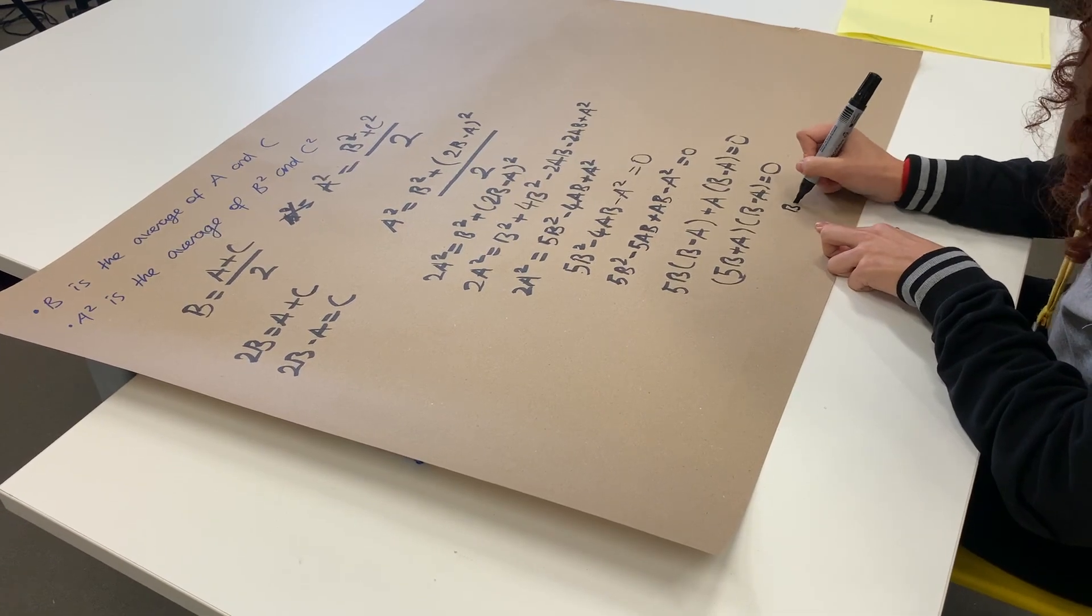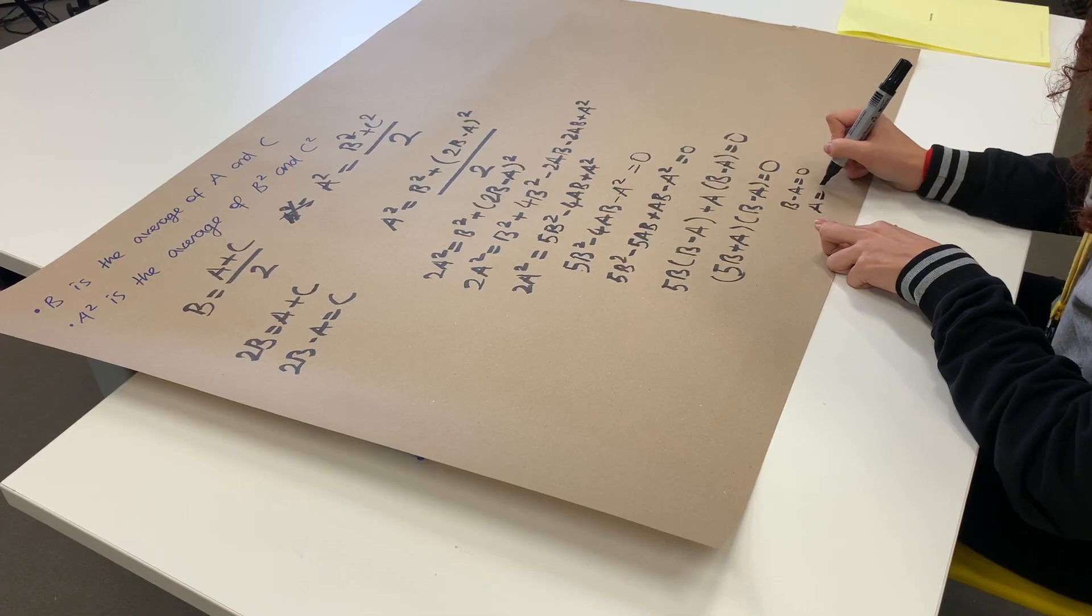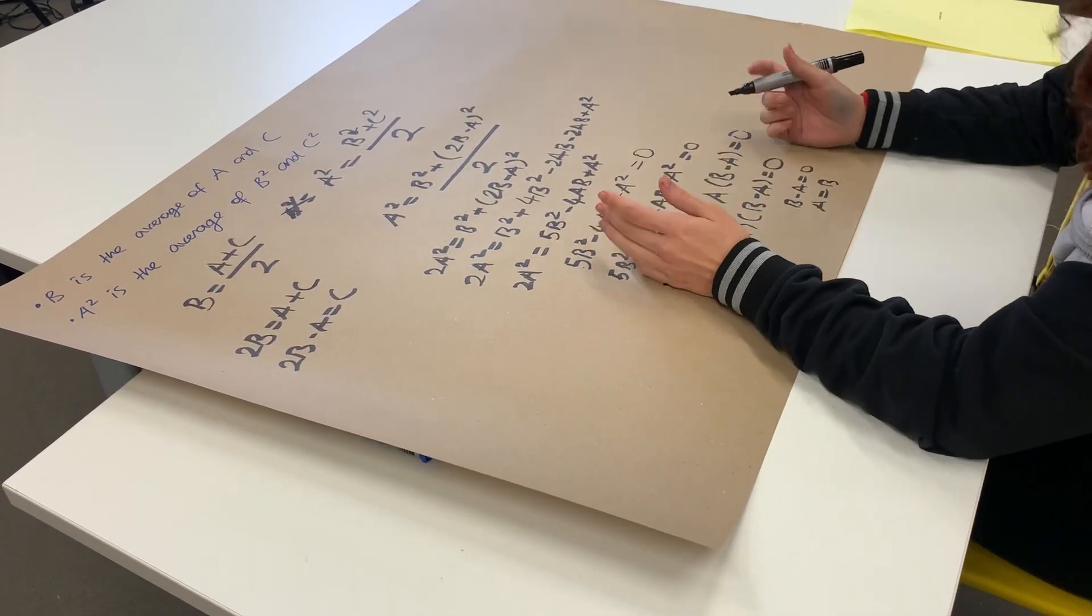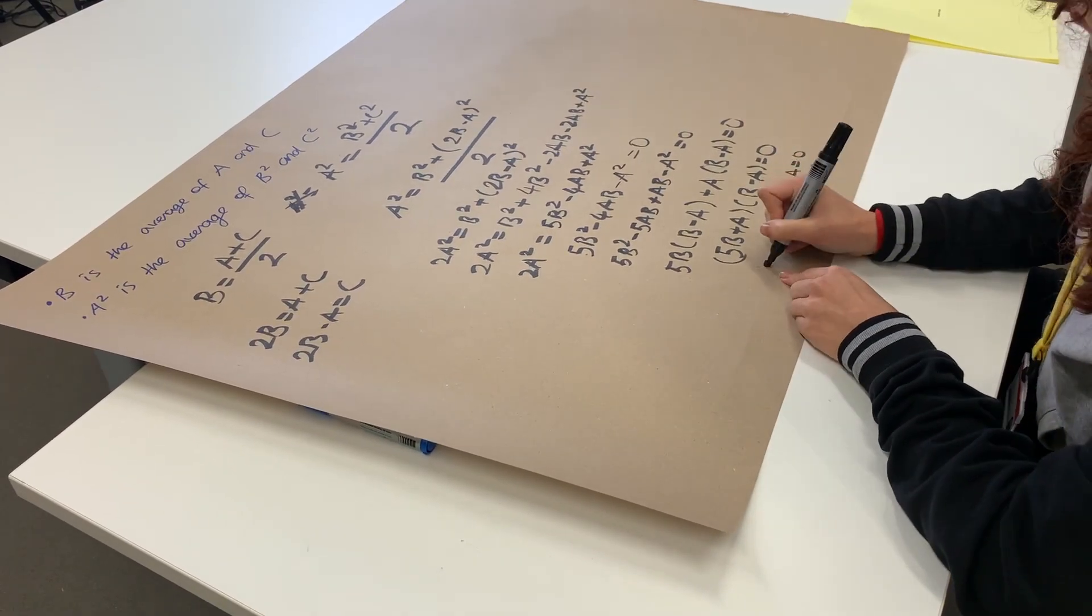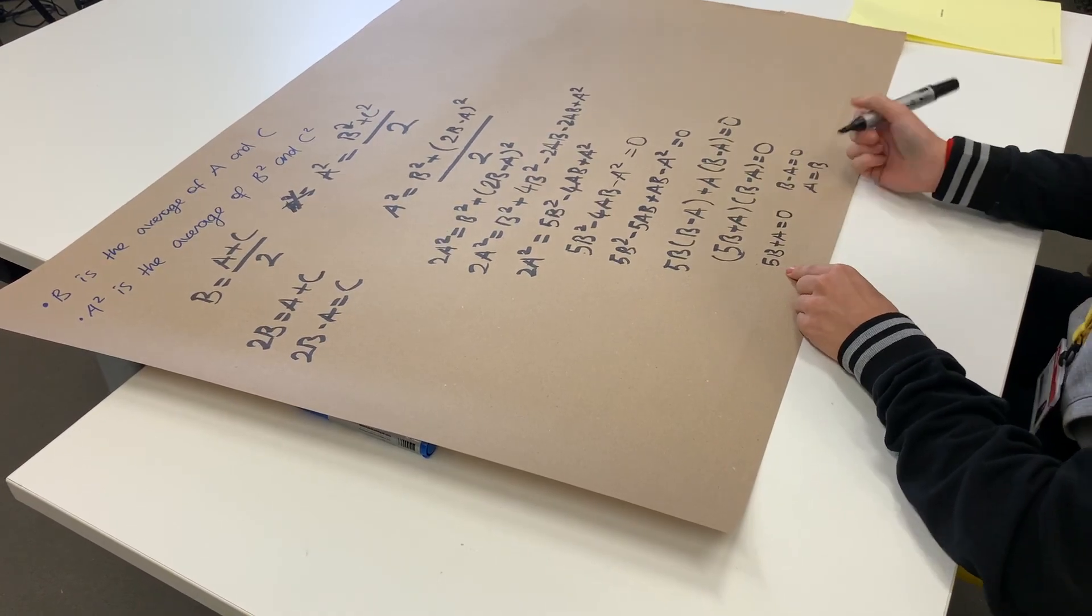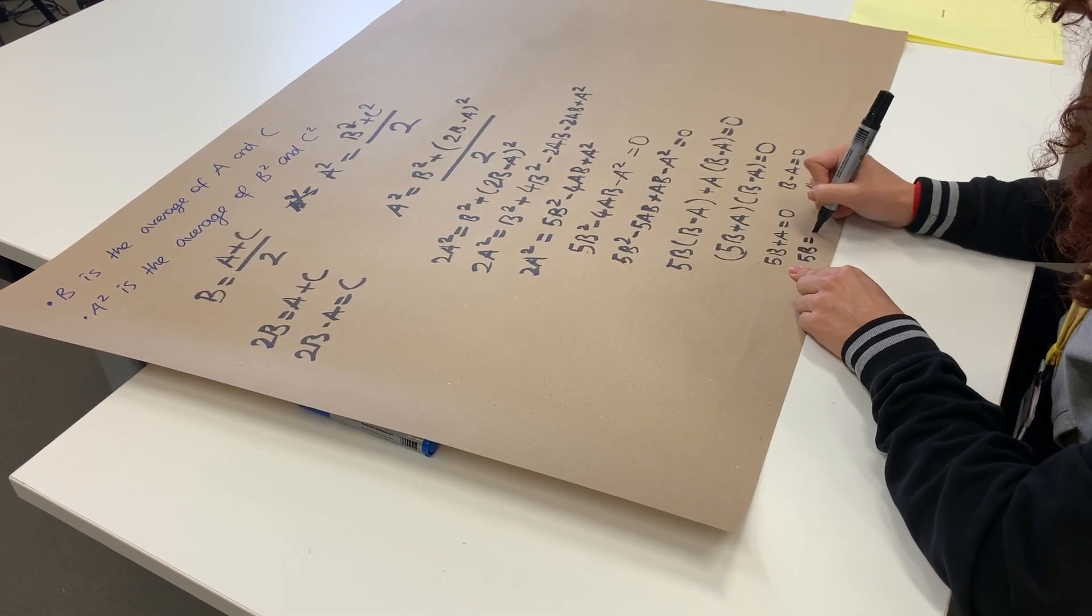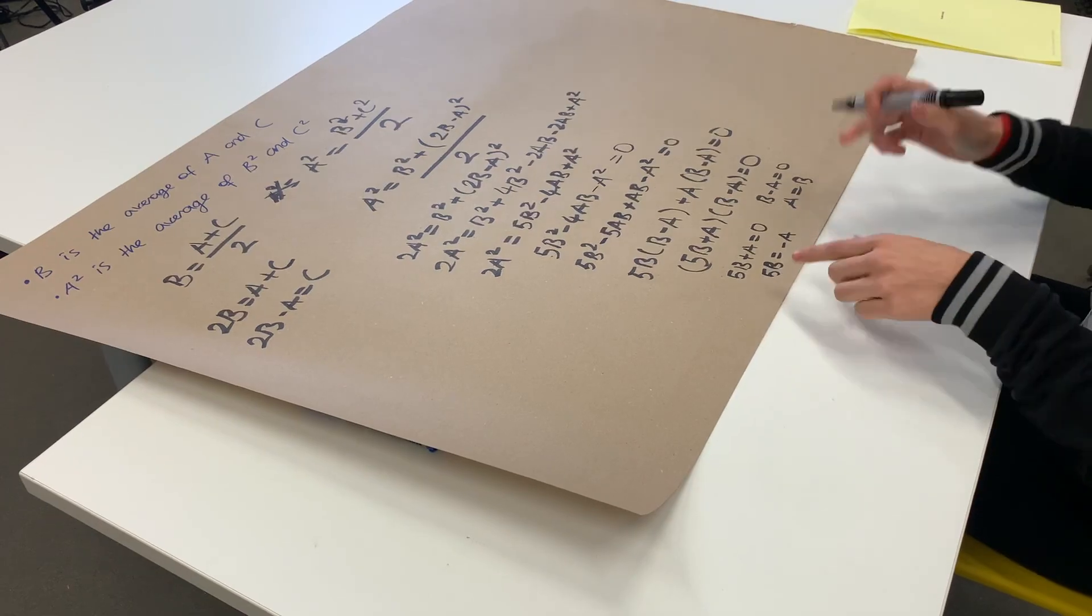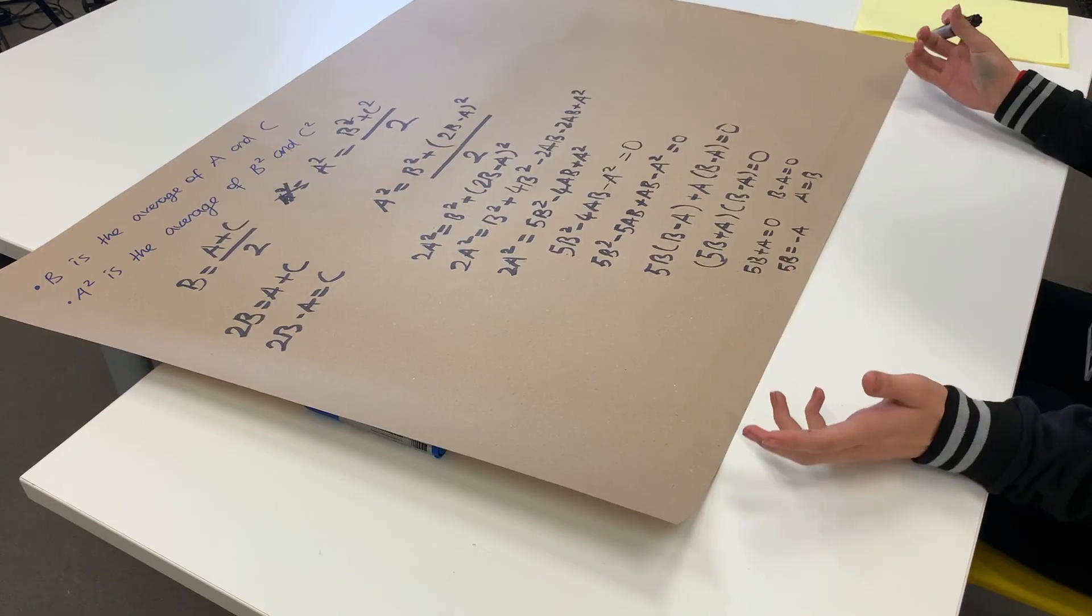So we could say B minus A is equal to zero, but this means that A is equal to B, which was said in the question that they have to be different numbers. So we cannot use this expression. And we got the other one where 5B plus A is equal to zero. And we could just say that 5B is equal to minus A. So this means if we plug in one for B, we have to have A as minus five.